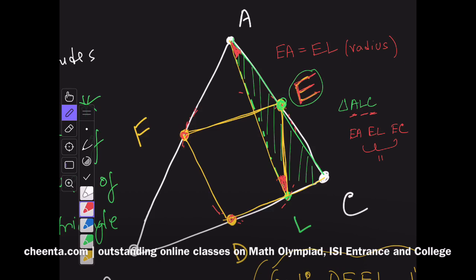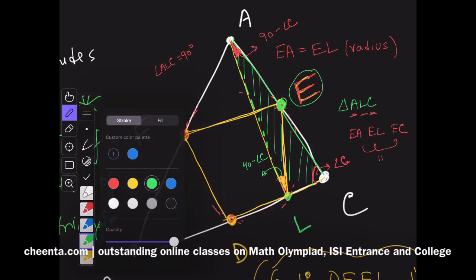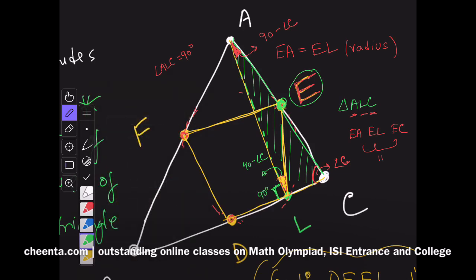If these two are equal, notice that this angle is C. This angle is 90 minus angle C because angle ALC is 90 degrees, which means that this particular angle is also 90 minus angle C. In fact, this angle right here ELD is 90 plus 90 minus C, which is 180 minus angle C.